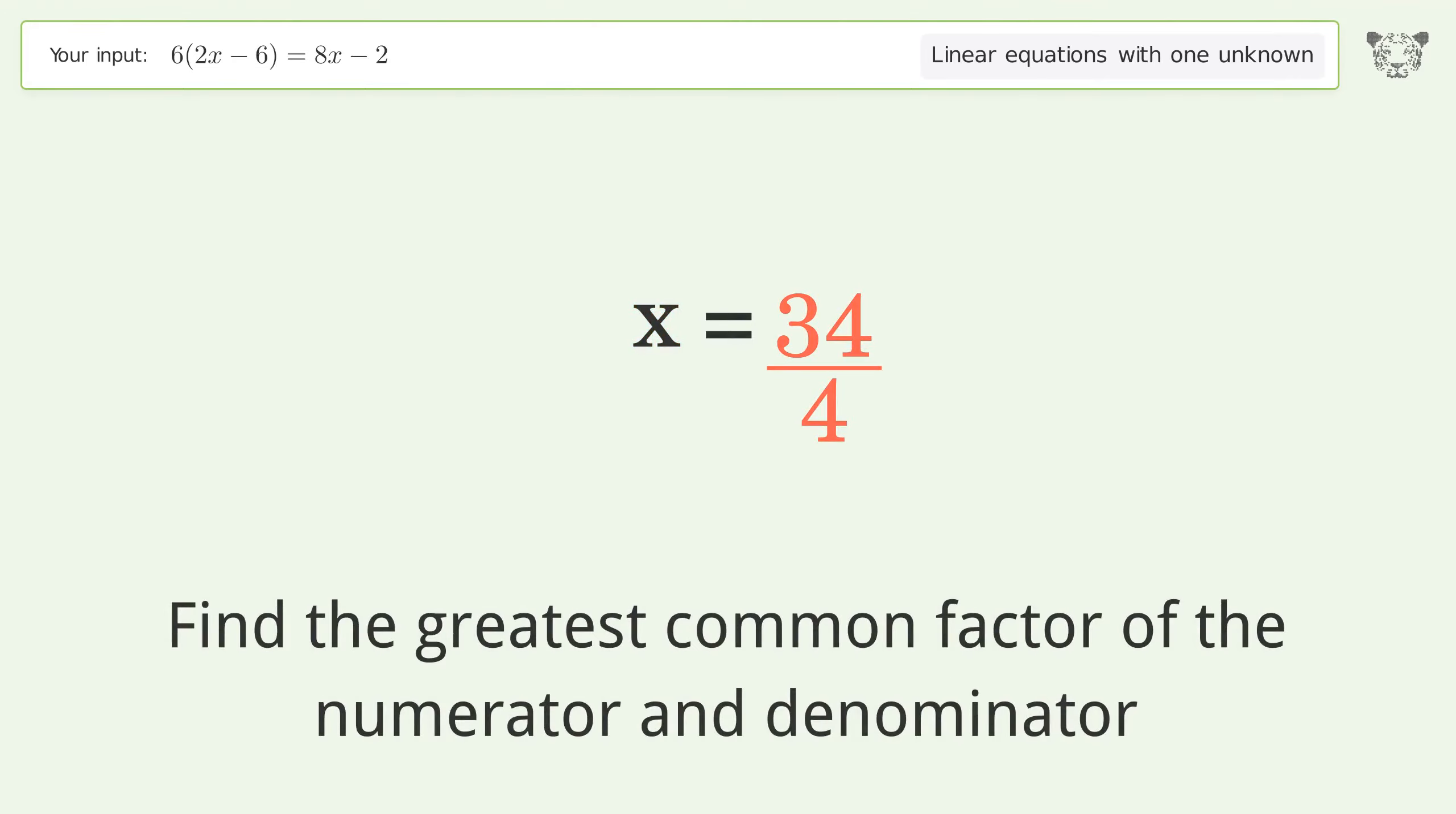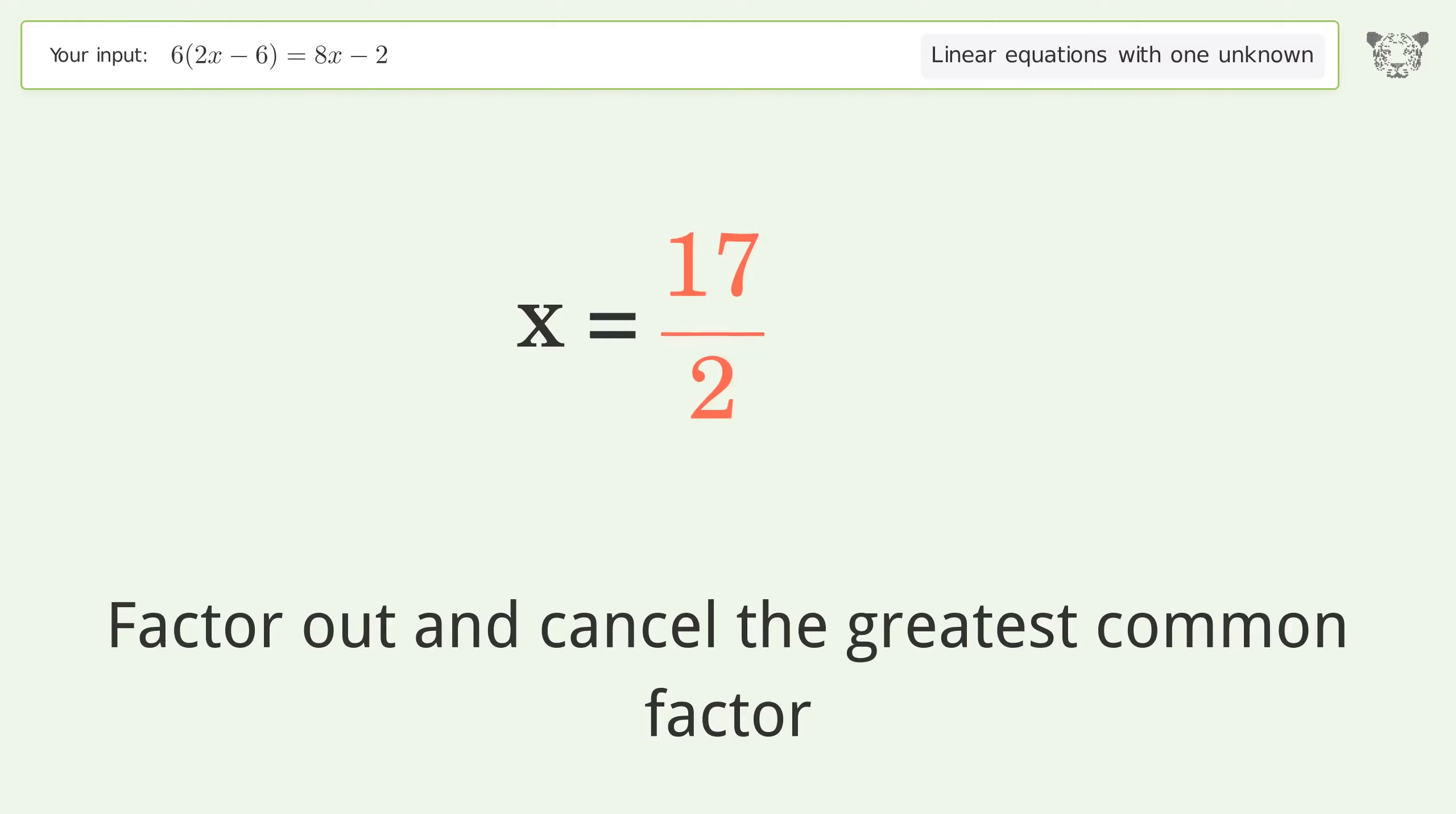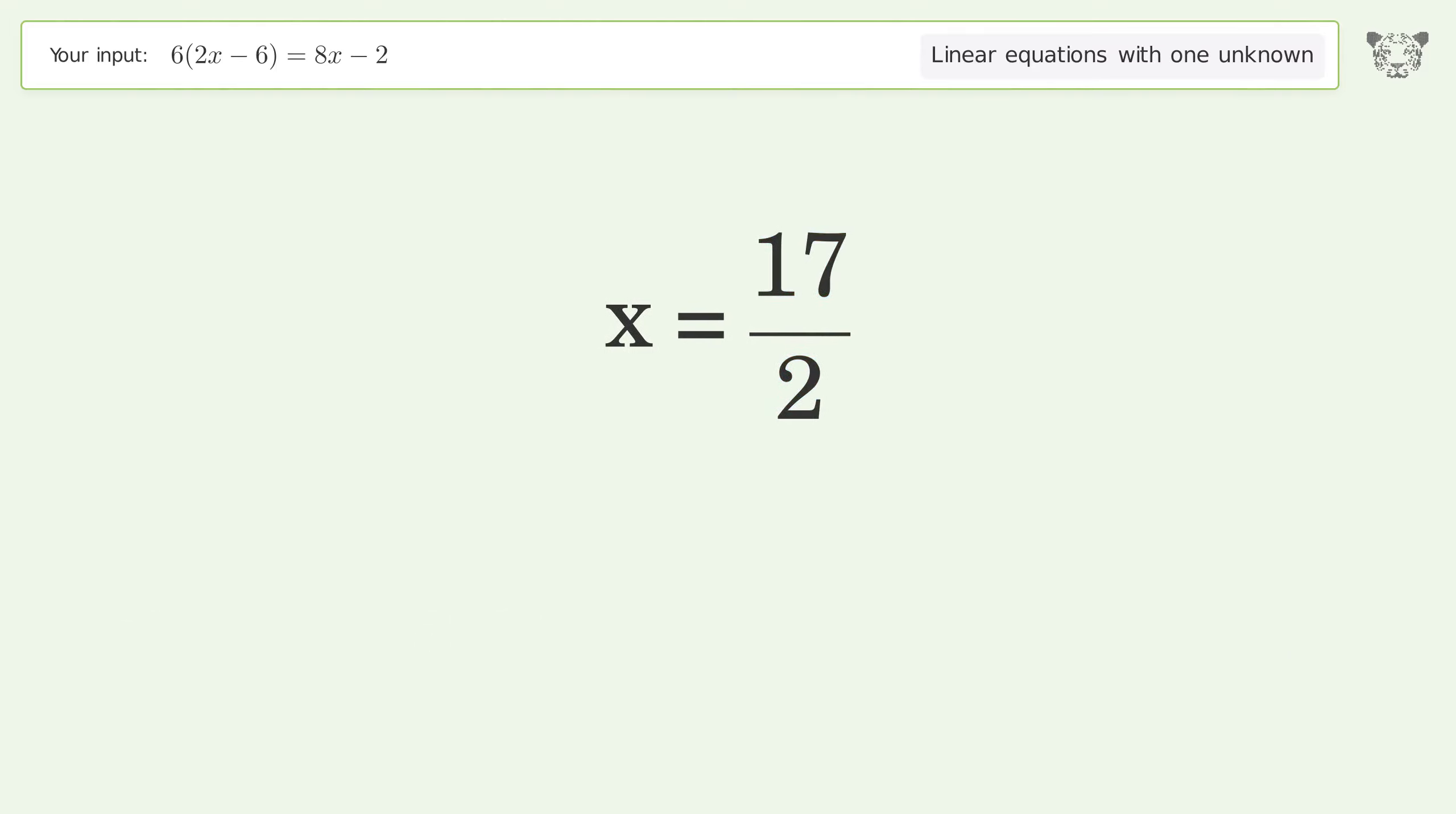Find the greatest common factor of the numerator and denominator. Factor out and cancel the greatest common factor. The final result is x equals 17 over 2.